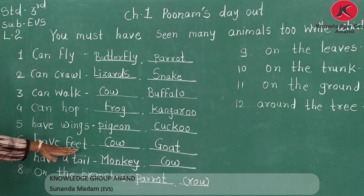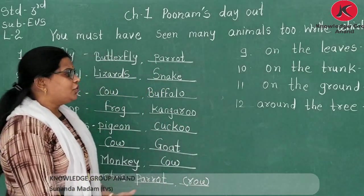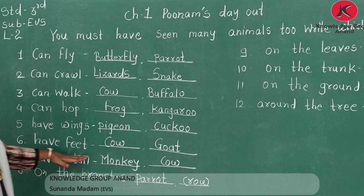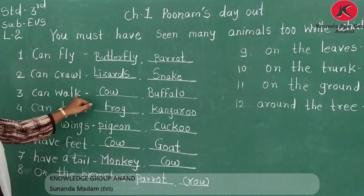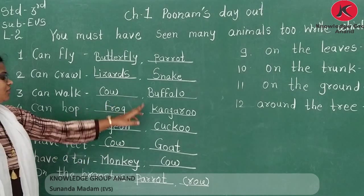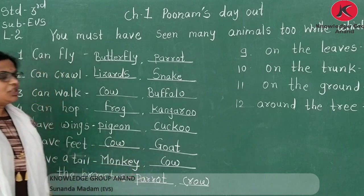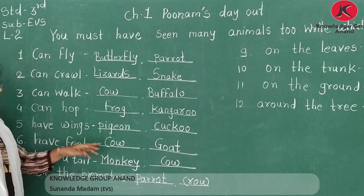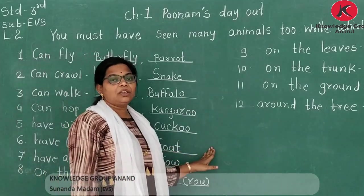Then sixth number is 'have feet.' Jo apne paon pe chalte hain, woh chal sakte hain — feet pe chalte hain aise animals. Woh hai cow. Similarly, walking animals and feet animals — means jo panjon pe chalte hain woh animals hain. Here cow and goat are mentioned; other animals you know, you can mention as extra.